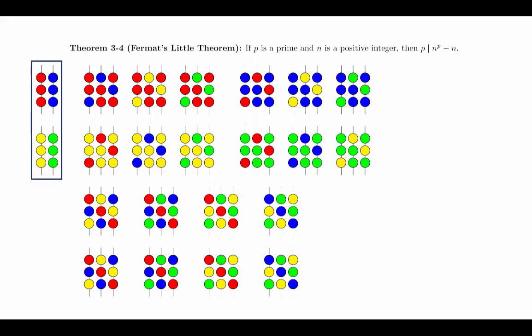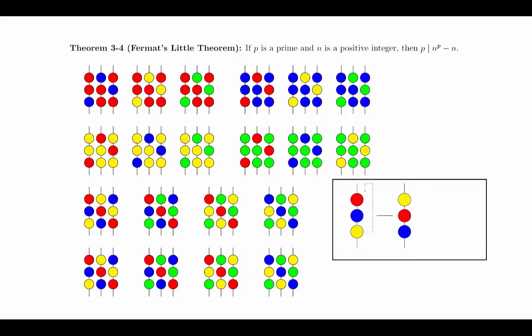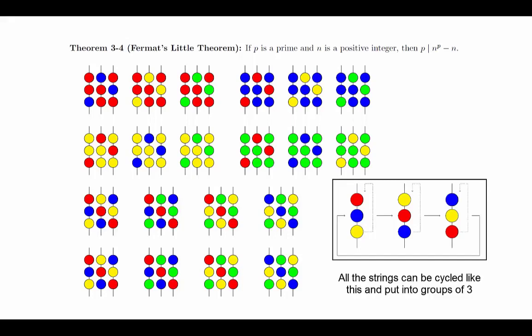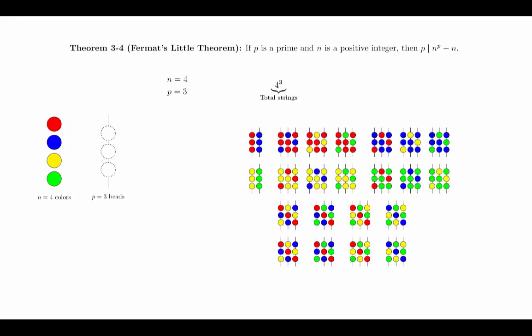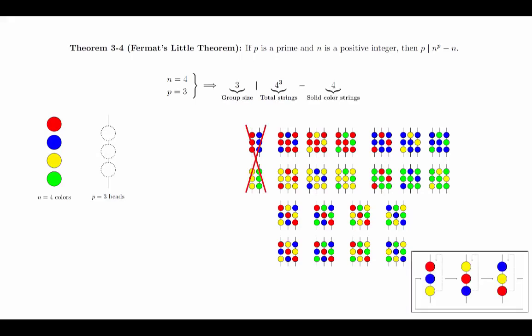Here are all 64 strings that we can make. Out of these, exactly 4 of them will be a solid color. We will remove these from the collection. Notice that we can take the bottom bead from any string and move it to the top to get a different string. We know that it will be different because we removed all the strings where the beads are all the same color. Since there are 3 beads, we can do this 3 times before returning back to the original string. This fact shows that 3 must divide the number of strings that remain after removing the strings of solid color. We started with n equals 4 colors and strings of length p equals 3, leading to 4 to the third, or 64 total strings. We then removed the 4 strings that were just a single color. The remaining strings are able to be put into groups of 3, so 3 must divide the remaining number of strings.